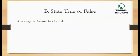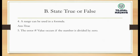The answer for that statement about cell address will be true. And the next statement: 'The error hash-value occurs if the number is divided by zero' — let's see about that error.